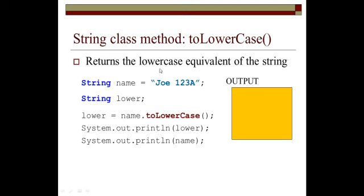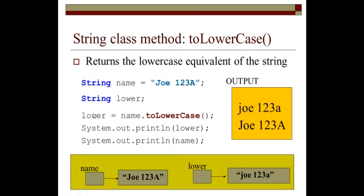toLowerCase. toLowerCase returns the lowercase equivalent of the string. So I have a string name equals Joe 123A. It has two letters that are capitalized. And then I'm making space for a string lower. Lower equals name dot toLowerCase, opening close parentheses. toLowerCase does not change name. It produces a copy of name and stores that in lower. So lower has Joe 123A plus the count. And then name has the capital J and capital A. In the output, I printed the lowercase first. Then I printed the name to show you that it's still going to remain. The name does not change.